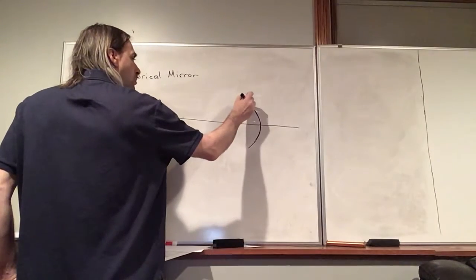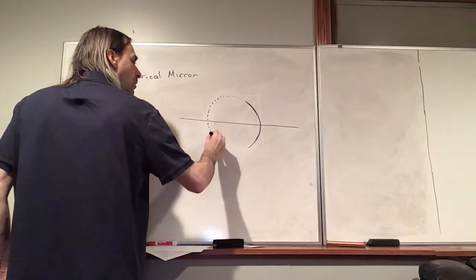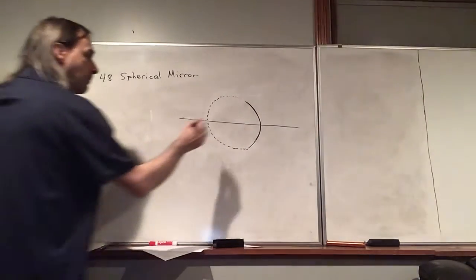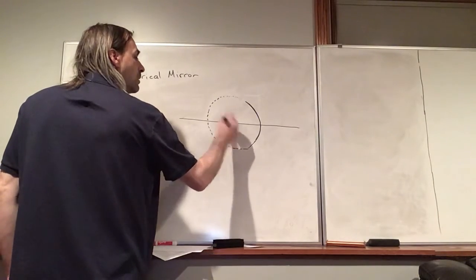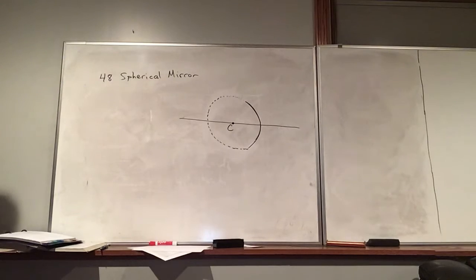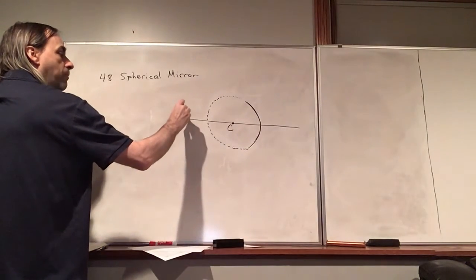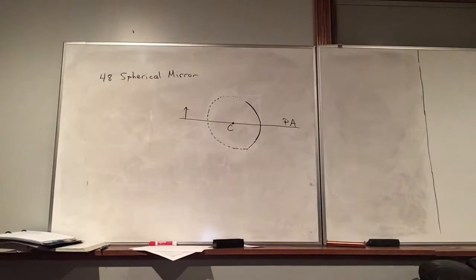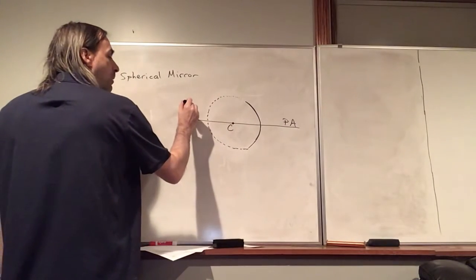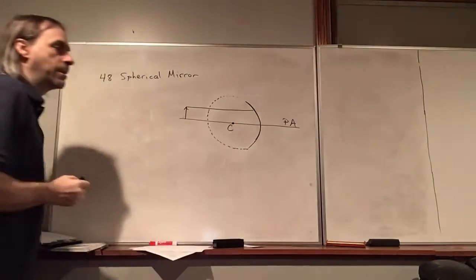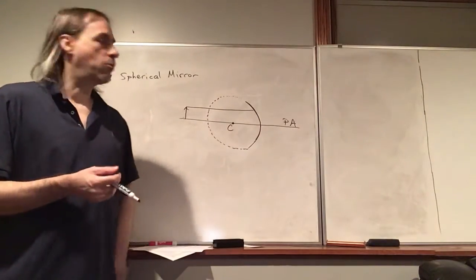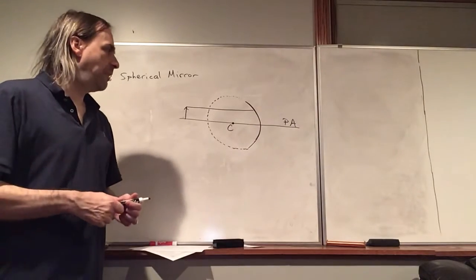I'm going to leave the whole circle — this would be like the full cross section of this sphere. And to identify that point C right in the center. Now let's say we have an object which we'll represent as an arrow. Let's call this line that goes through the center of the mirror the principal axis. We're going to draw a ray that is coming in parallel to the principal axis. Now how does light reflect off of a curved surface? Well, the curved surface — we're considering a ray which has no width really, or a very small one.